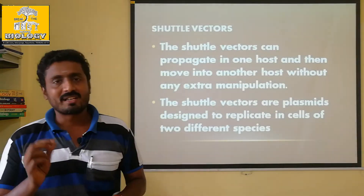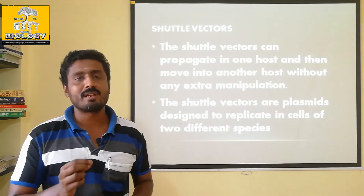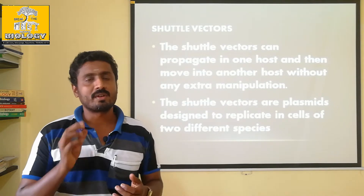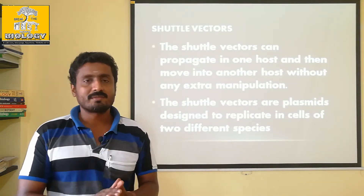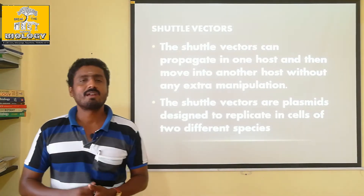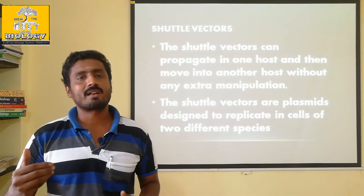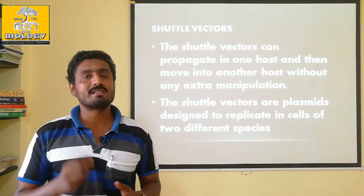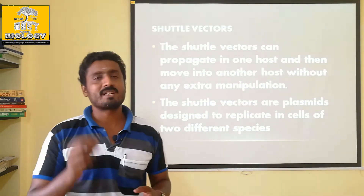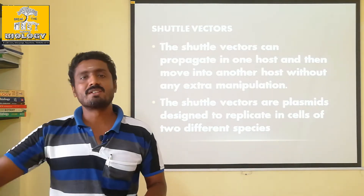If you use a plasmid, you can create a recombinant DNA. You multiply it with a desirable character. In the case of insulin-producing DNA, you multiply it with a plasmid in E. coli and scale it up.